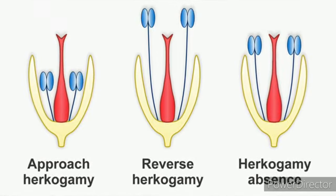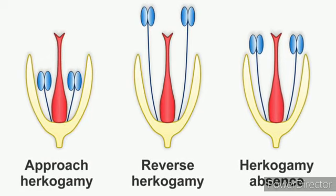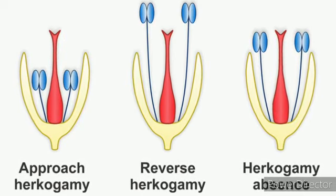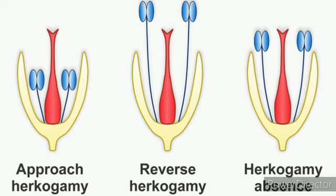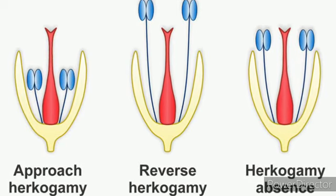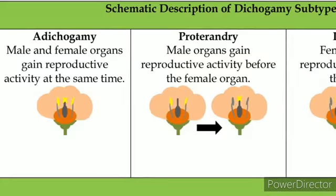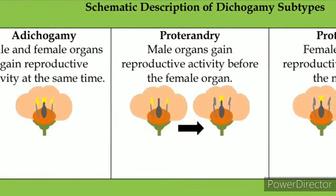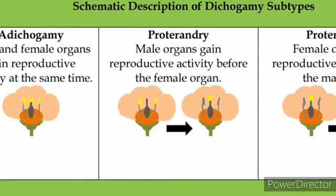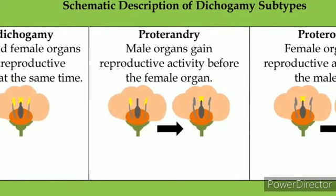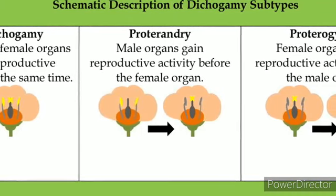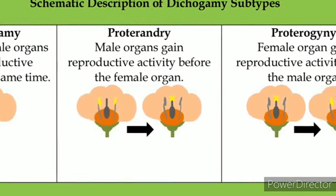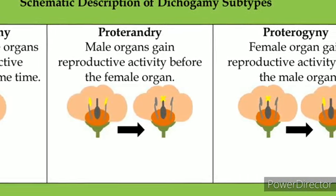The first strategy is dichogamy, where sex organs mature at different times. It is of two types: protandry, in which the androecium (male sex organs) matures earlier than the gynoecium; and protogyny, in which the gynoecium (female sex organs) matures earlier than the androecium. Example for protandry is sunflower, and for protogyny is datura.